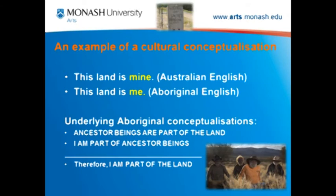This example is from my research on Aboriginal English, the variety of English spoken by Indigenous Australians. In Australian English, you would say 'this land is mine' — land is conceptualized as a commodity that can be bought, sold, and passed from one individual to another. But in the Aboriginal world view, the land is conceptualized differently: as embodying the ancestor spirits who, in the dreamtime, created the land and became part of it. Because ancestor beings are part of the land and I am part of my ancestor beings, I consider myself as part of the land — therefore, 'this land is me' rather than 'this land is mine.'